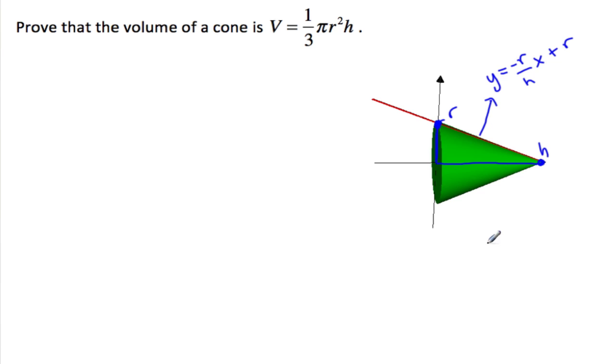Now we're going to revolve it. To do that, we need the integral of π r², r being the radius, r being our function. So π times (-r/h times x plus r)² dx from 0 to h.